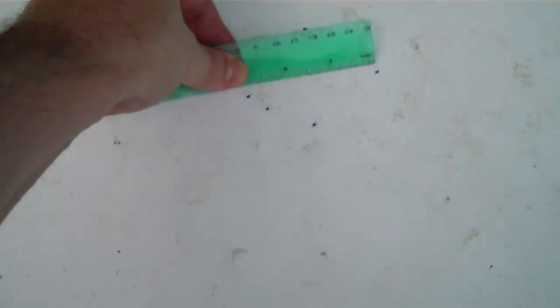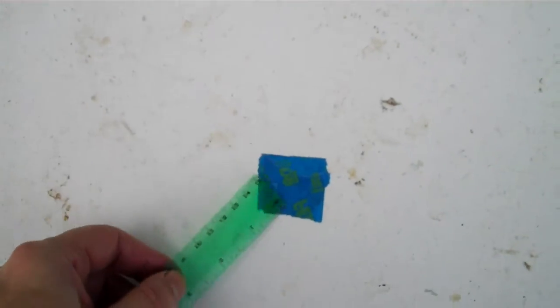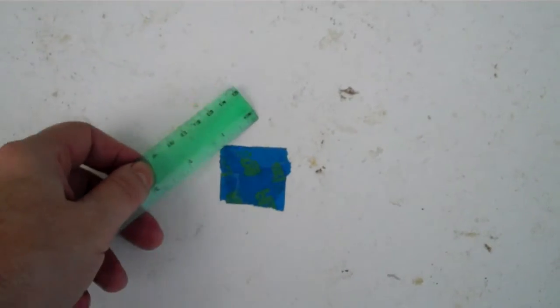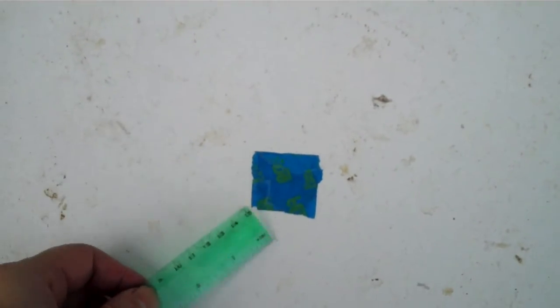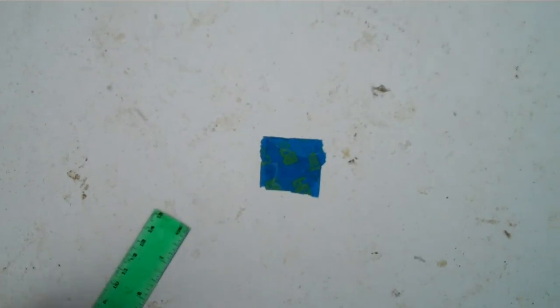You want to take that group and move it down here by counting the clicks on your turret. Once you cluster ten of them around that one-and-a-half-inch piece of tape, you're good. You're sighted in for cans.